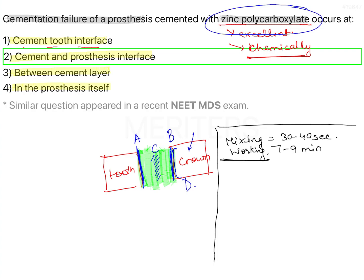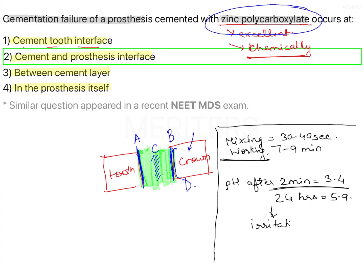The next thing to know about zinc polycarboxylate is the pH. After two minutes, the pH is 3.4, and after 24 hours it is 5.9. It is a little acidic while still setting, and over the first 24 hours it can produce mild irritation and pulpal inflammation. But it has very good bond strength and reacts chemically to the tooth, which is why it was once a very popular cement for final cementation.